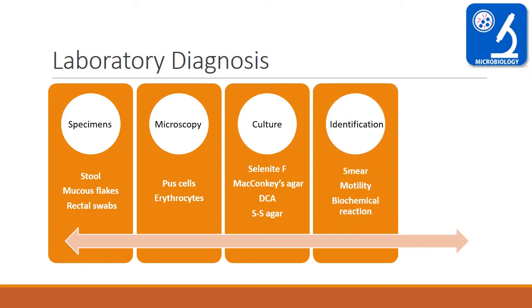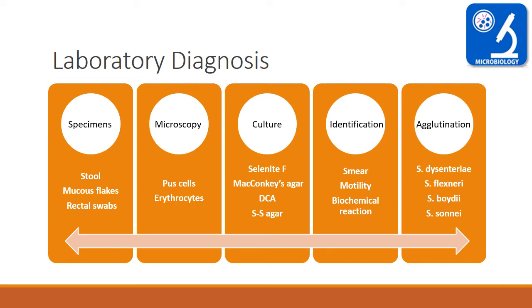For identification, you can see gram-negative bacilli on gram stain. These bacteria are non-motile. You can differentiate the different species with the help of biochemical reactions and slide agglutination test. According to the slide agglutination test, Shigella is divided into four major groups: Group A is Shigella dysenteriae, Group B is Shigella flexneri, Group C is Shigella boydii, and Group D is Shigella sonnei.